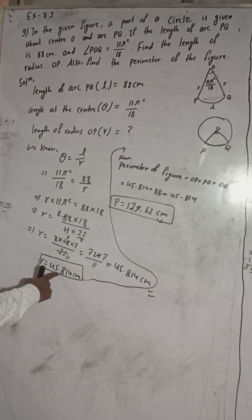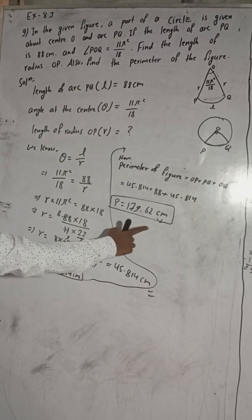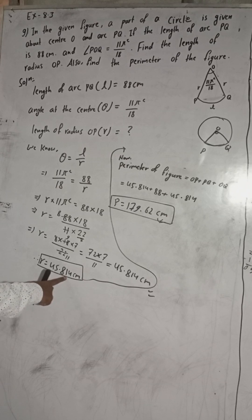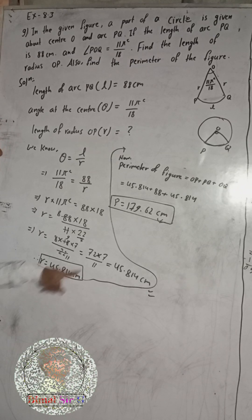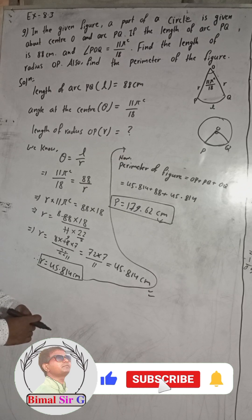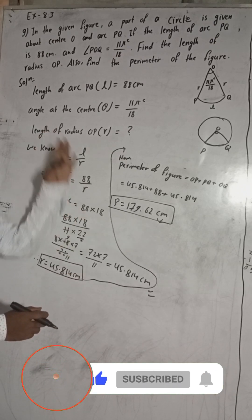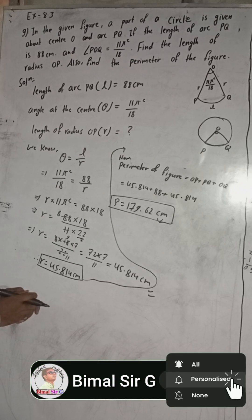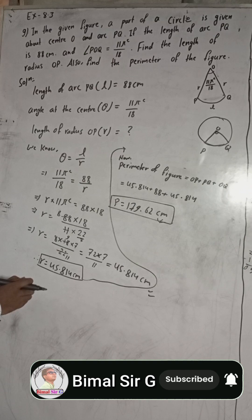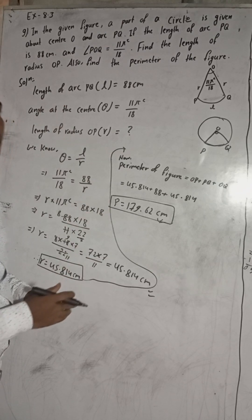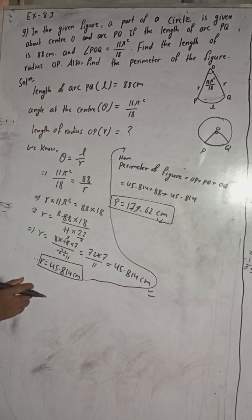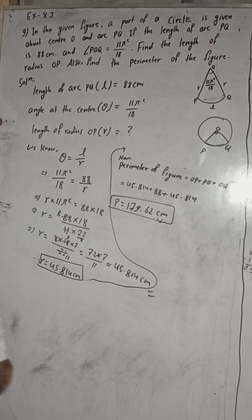Therefore, length of the radius is equal to 45.814 cm and the perimeter of the figure is 179.62 cm. If you have any doubts in any of these steps, please feel free to comment in the comment box — I will try to reply as soon as I can. On my YouTube channel you can check the playlist and you will get lots of solutions for math for classes 12, 10, 9, and many more. See you in the next videos!